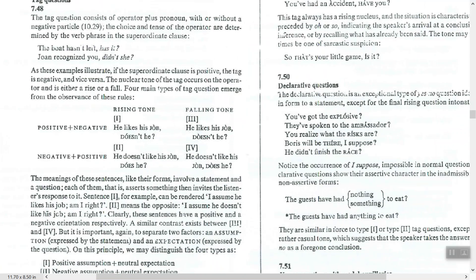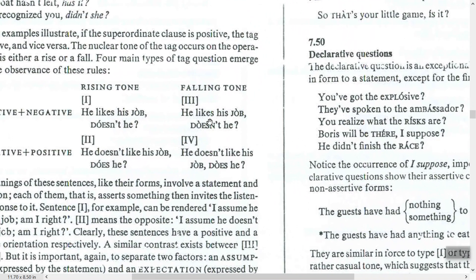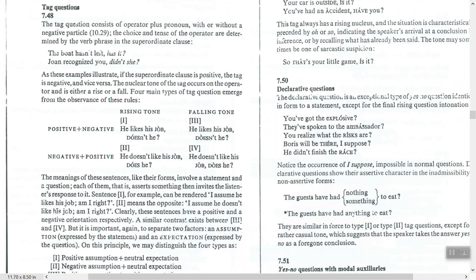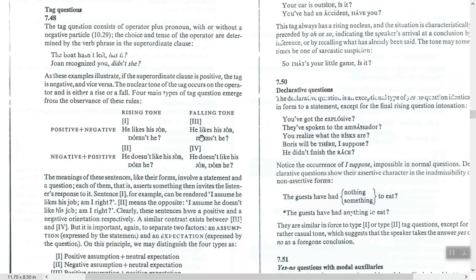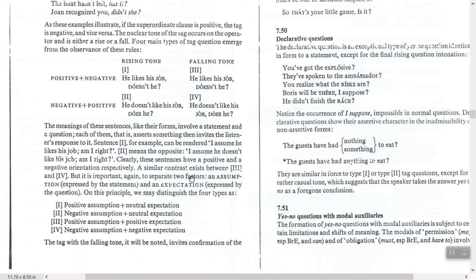With a negative statement and positive tag using a falling tone: 'He doesn't like his job, does he?' — here the tone falls. So we have contrasts between rising and falling tones depending on the polarity combination of statement and tag.